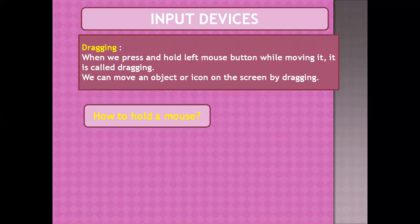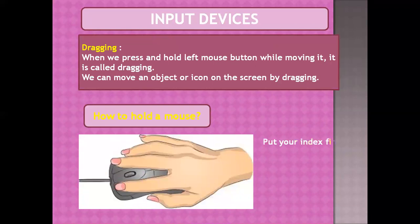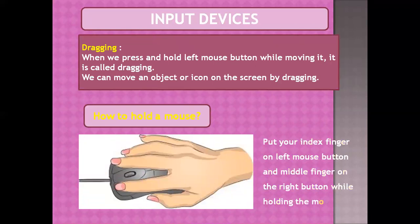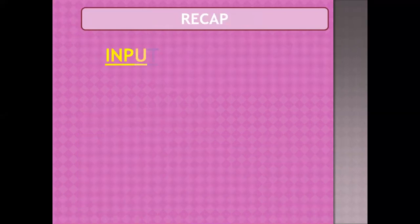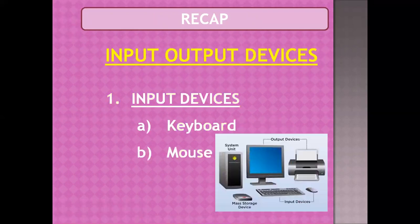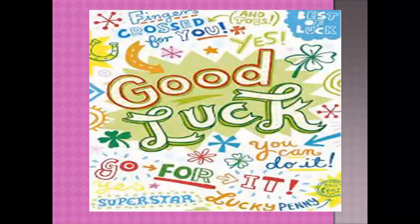To hold a mouse so that your hands don't get strained, place your index finger on the left mouse button and your middle finger on the right mouse button while holding the mouse firmly. This is the correct way of holding the mouse. Today, in input and output devices, we talked about keyboard and mouse, which are the two most common input devices. Thank you so much for watching. Good luck, keep it up, and keep doing the good work. Allah Hafiz.